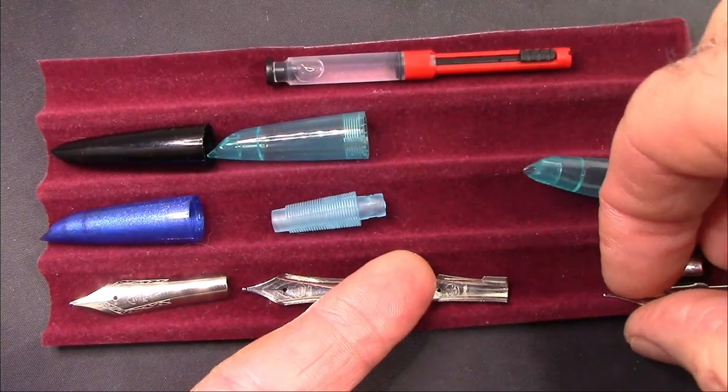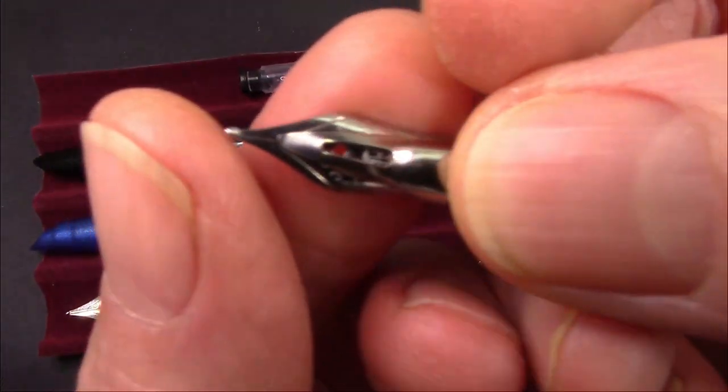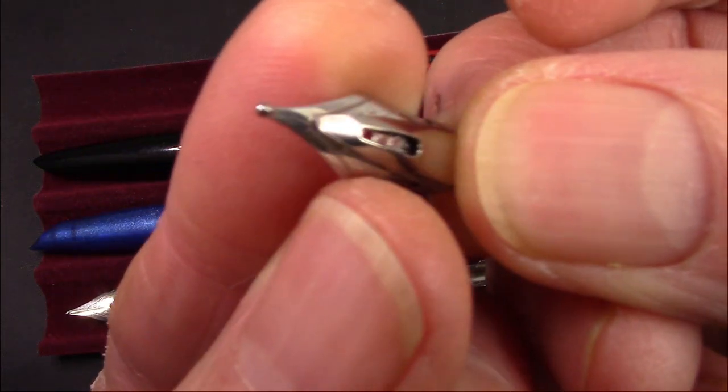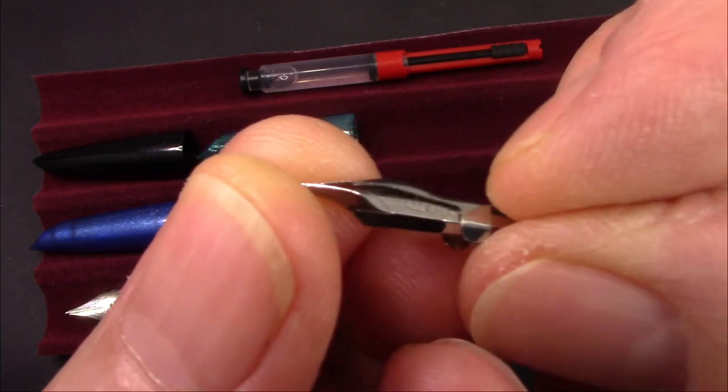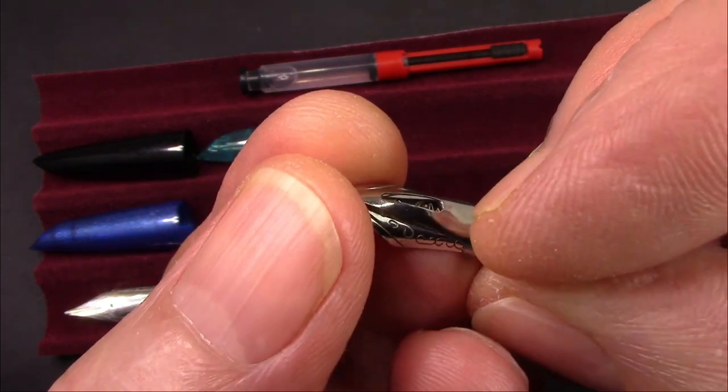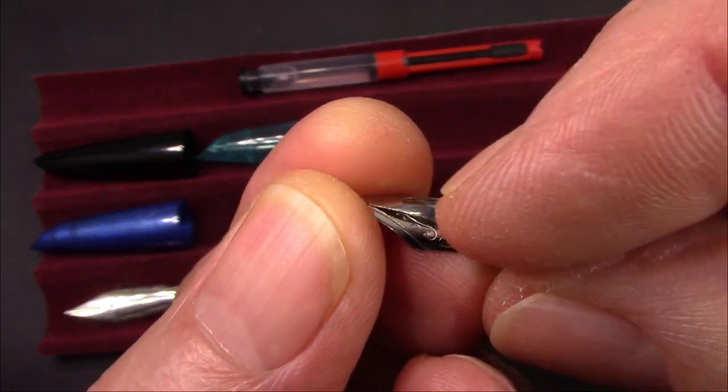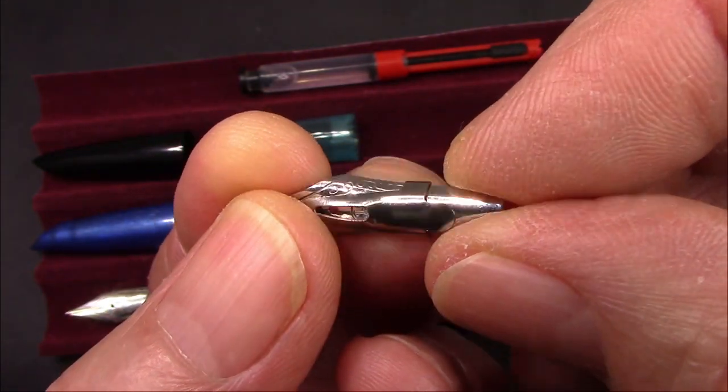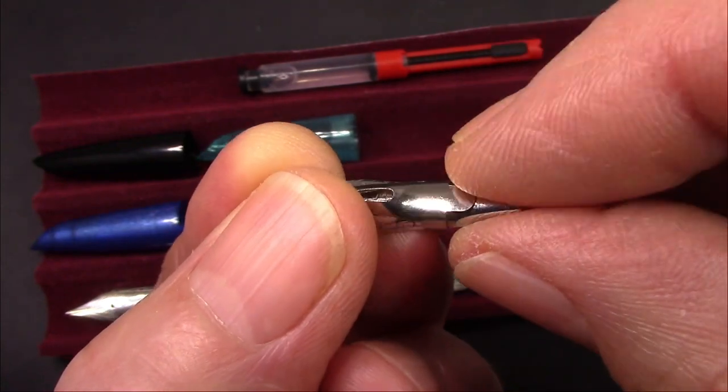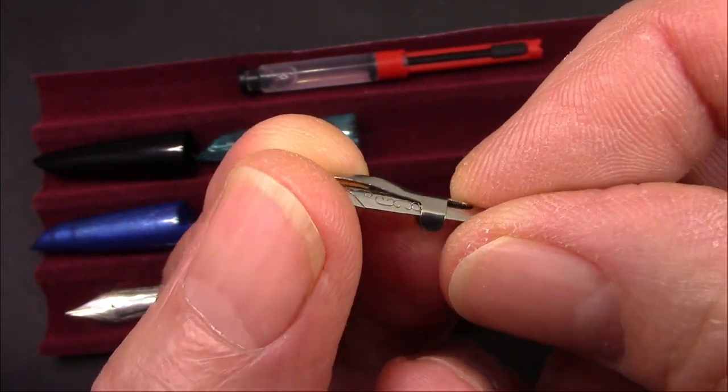This is a nib I'm not certain exactly how I got it. I have two of them, but it also is a number five. There's a decent amount of tipping material on it as that overlay, which is generally a dip pen type of thing because it holds extra ink there. And the way it's designed, I think this would be hard to fit into most of my pens because there's not enough room inside the section for that extra thickness.